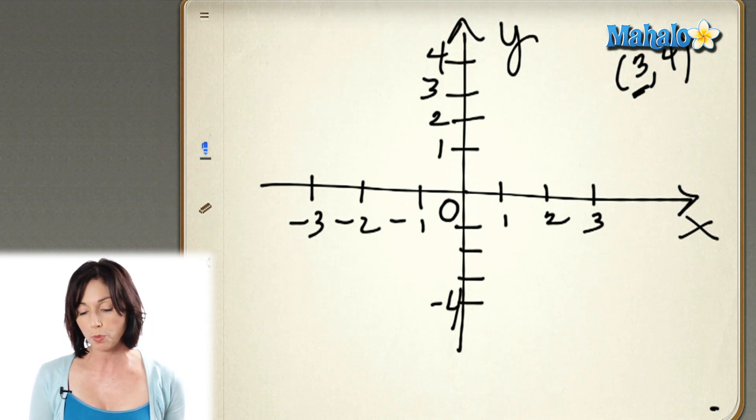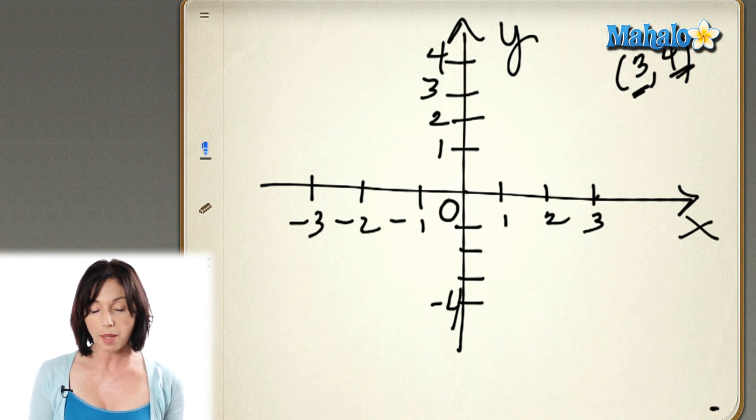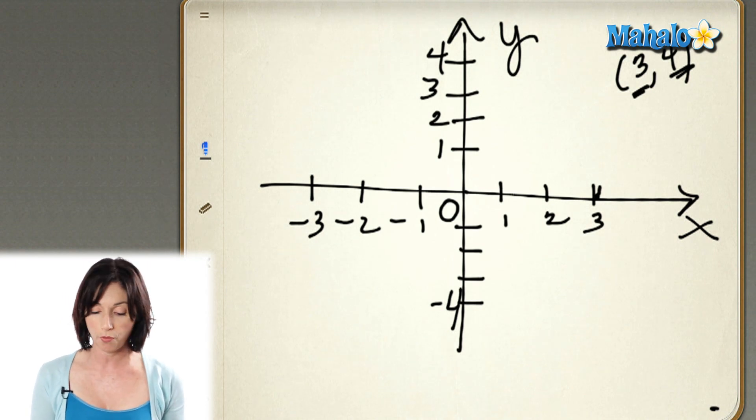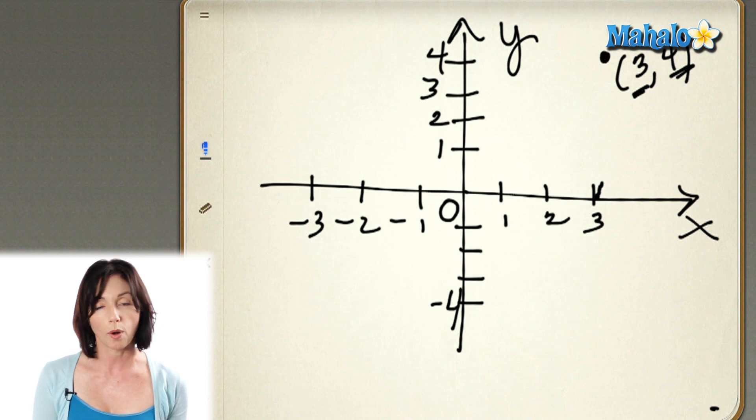And then what we do is we look at the y-coordinate, the 4. And from that point where we are on the x-axis, we move that many points on the y-axis. So we're going to go up 4, so we go 1, 2, 3, 4, and our point 3, 4 is right up there.